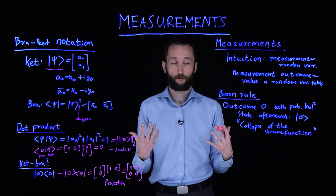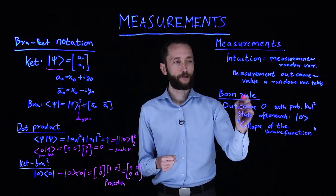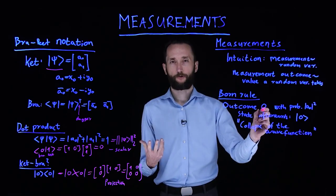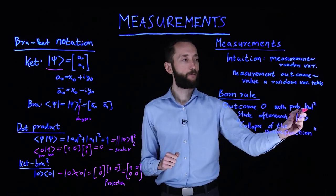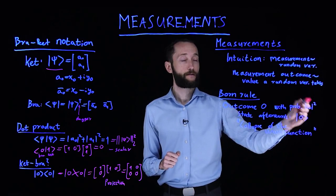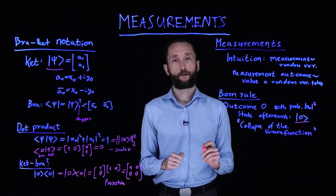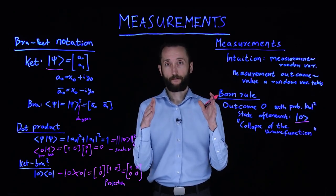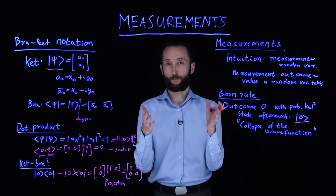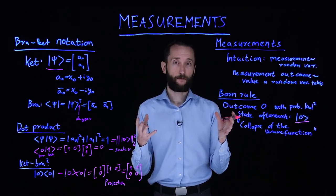To make it more formal, if you remember, we mentioned the Born rule, which tells you that you get some outcome 0 of the qubit state with probability the absolute value of a_0 squared. The state afterwards becomes the zero ket. The superposition is destroyed, and you only get one part of the superposition. This is random which part you get with a certain probability, but this is what we call the collapse of the wavefunction.